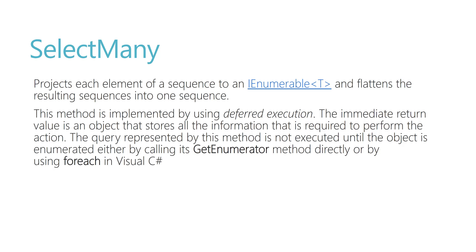SelectMany projects each element of a sequence to an IEnumerable of type and flattens the result sequence into one sequence. This method is implemented using deferred execution — also called lazy execution. The immediate return value is an object that stores all the information required to perform the action. The query is not executed until the object is enumerated, either by calling its GetEnumerator method or by using a foreach in C#.